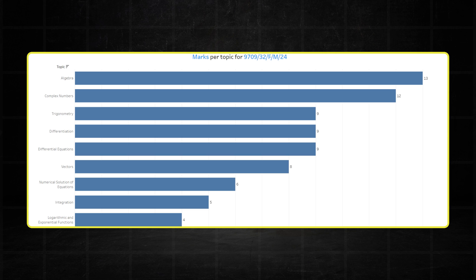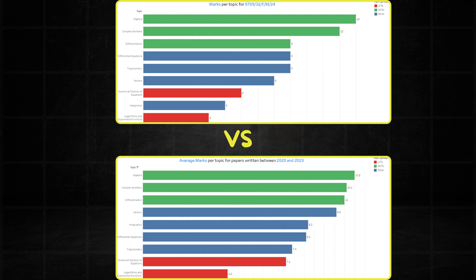So here's the mark distribution for the February-March paper. And looking at it, quite surprisingly, there's nothing unexpected that happened. Everything seems quite reasonable. In fact, if we compare these marks to the average marks from 2020 to 2023, you will notice many similarities.